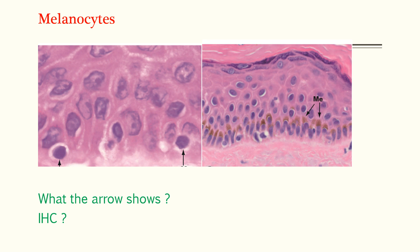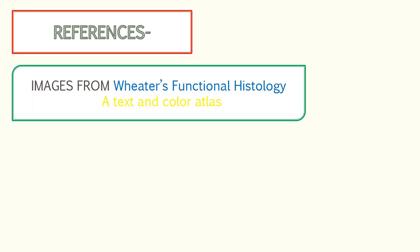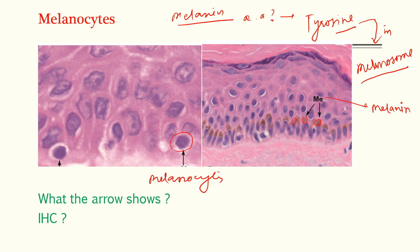Moving on, we have melanocytes. Can you identify the structure shown here? These cells are melanocytes, and they produce melanin. Melanin is produced from which amino acid? It is tyrosine. Tyrosine is processed in the organelle called the melanosome. You can clearly see the keratinocyte with the brown color pigment — these are melanin. Talking about IHC, it is positive for melan-A, of red color, and another marker is langerin, which is of brown color.